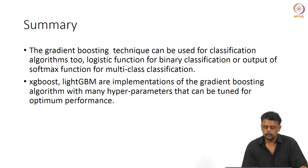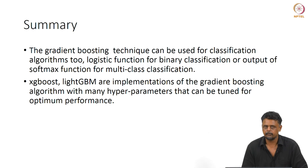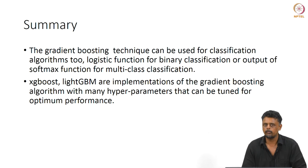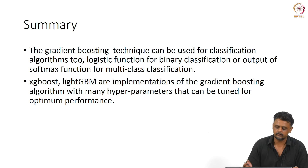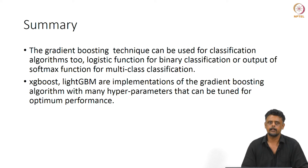Gradient boosting can also be used for classification algorithms. When doing classification you use a logistic function — the paper mentioned at the beginning of the lecture describes how to do that — or softmax functions for multi-class classification. In that case the output is a probability value rather than the class itself; you work with probabilities as real numbers and try to move them closer to 1. XGBoost and LightGBM are implementations of the boosting algorithm with many hyperparameters that help you tune for a particular problem and optimize performance. Thank you.